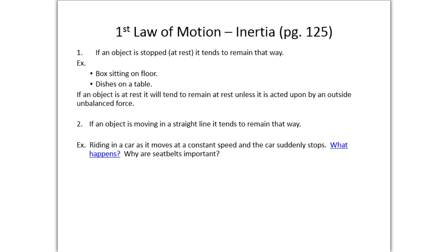So if you're riding in a car at a constant speed and the car suddenly stops, what happens? Well, through experience, you know that if the car is moving forward and suddenly stops, you continue to move forward. And from that, why are seatbelts important? Seatbelts are important to prevent you from leaving the car and going through the windshield.